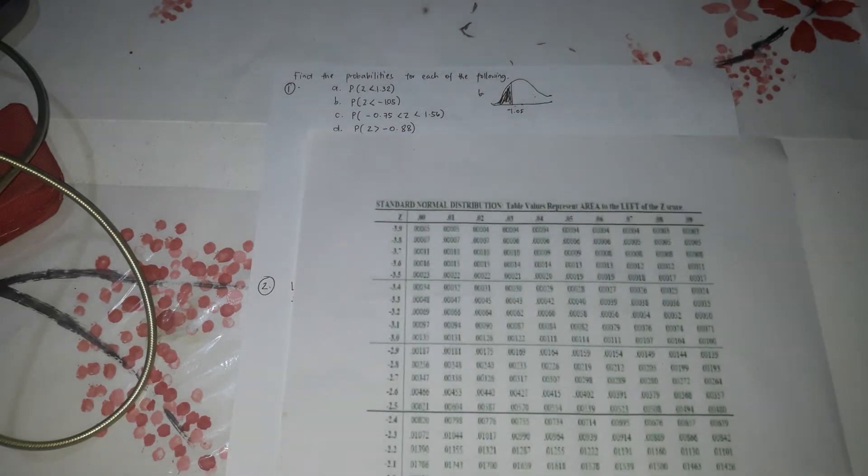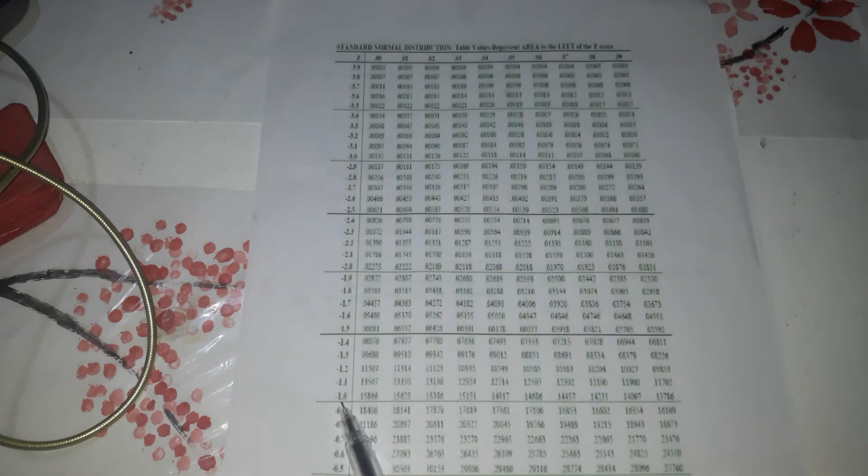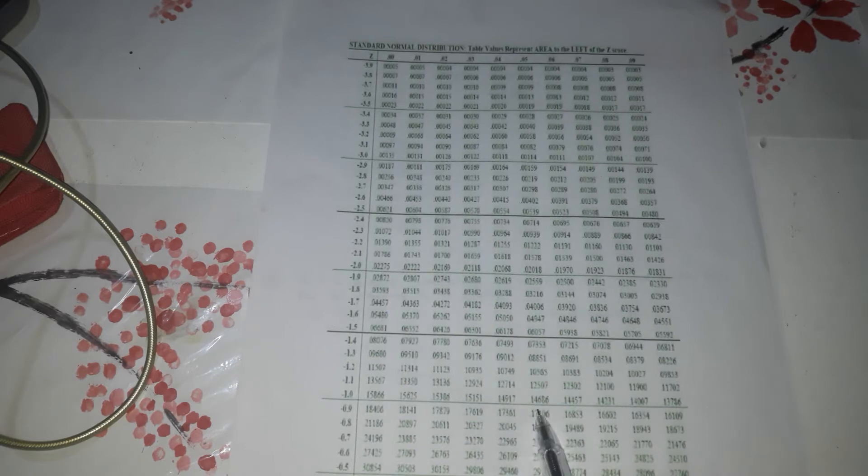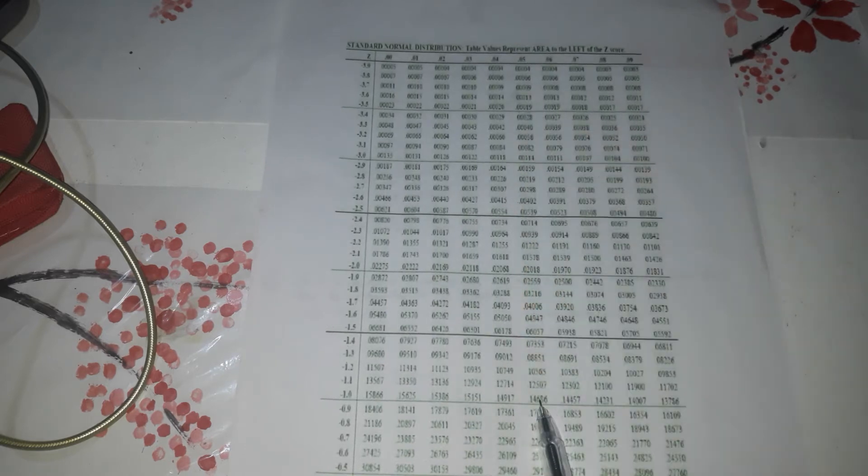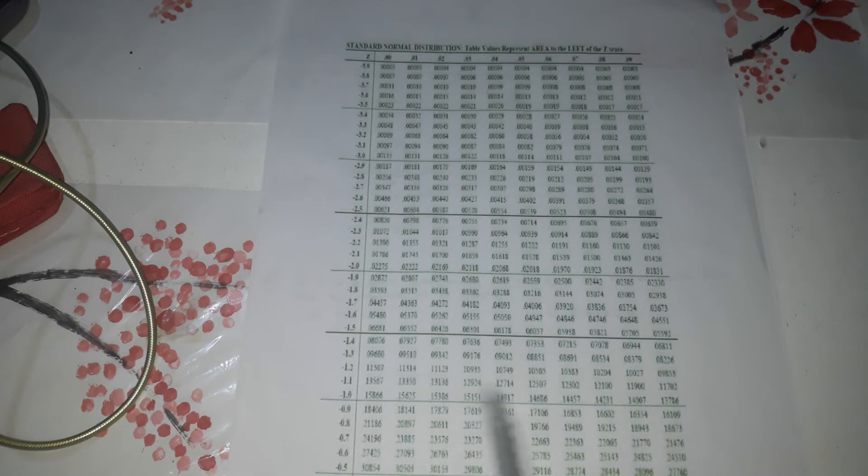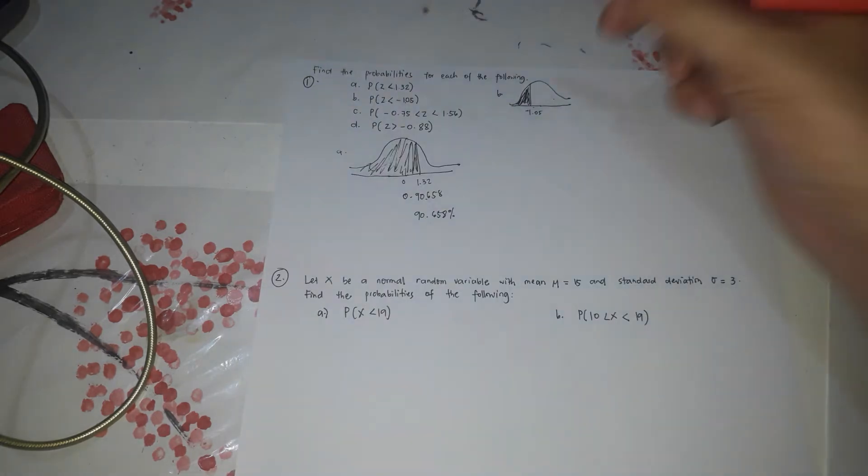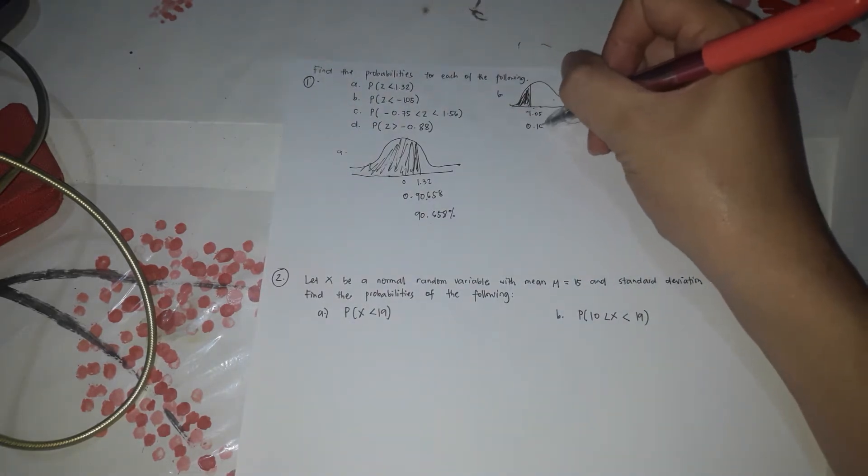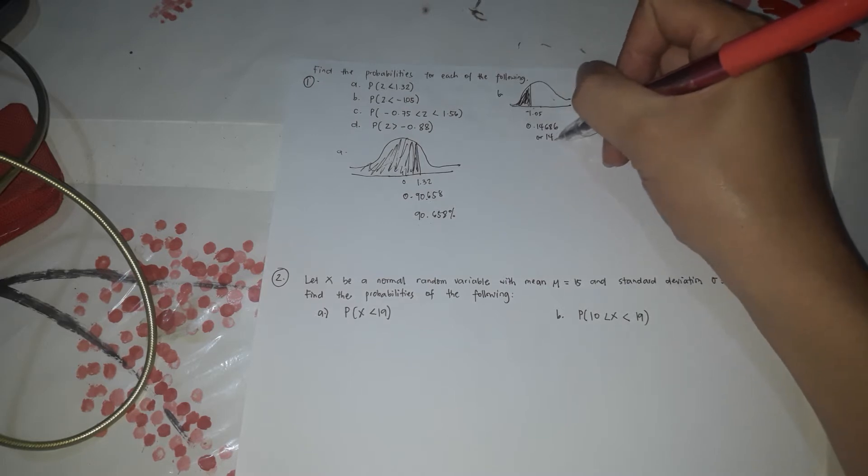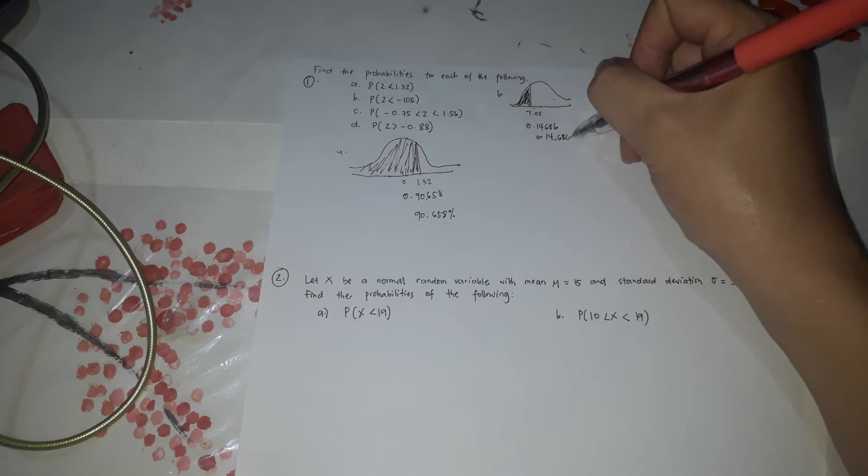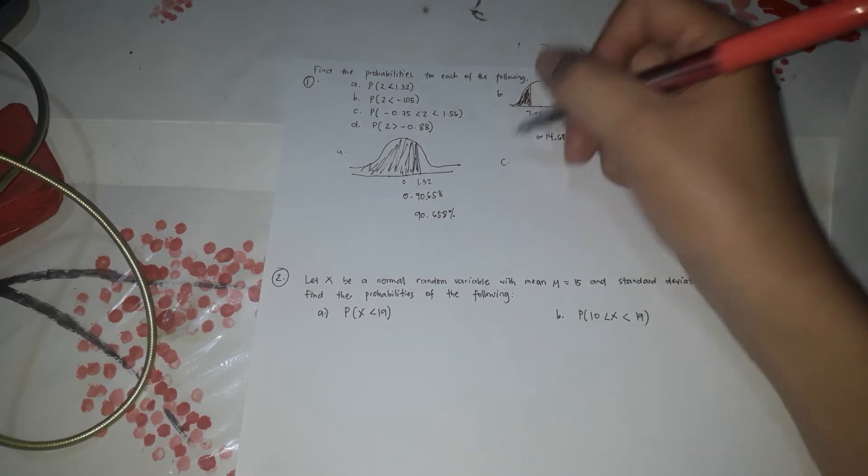So negative. We will use the negative. So negative 1.05. Negative 1.0. This is negative 1.0. So 5 in here. So 5. Straight to negative 1.0. So it's 0.14686 or 14.686%.